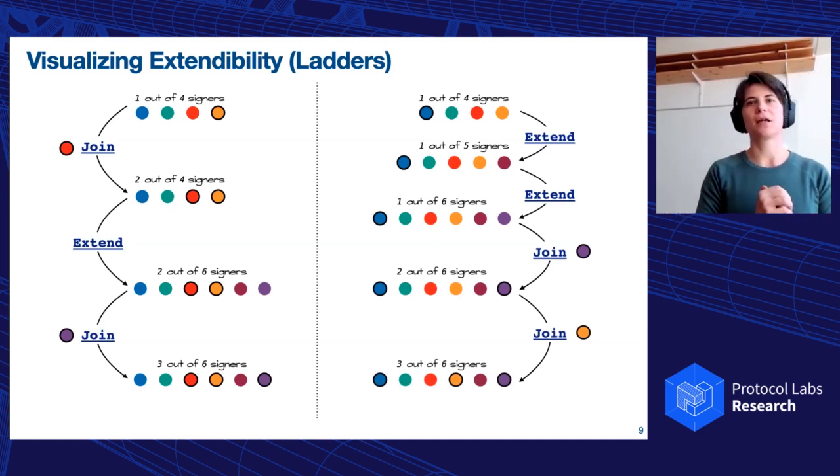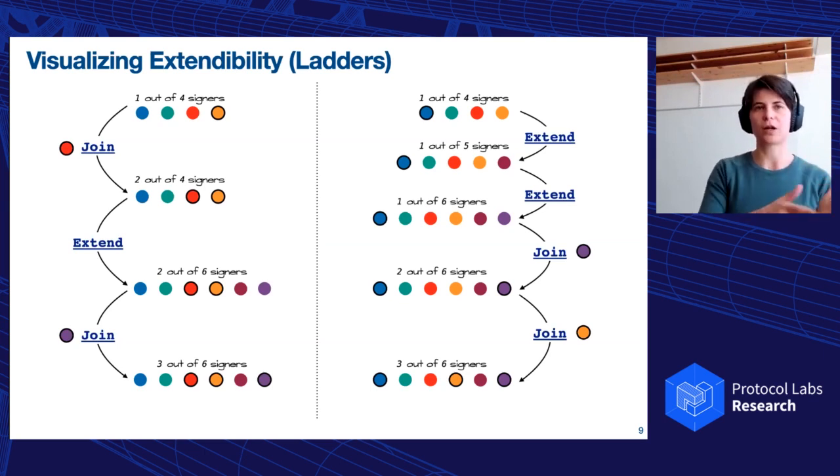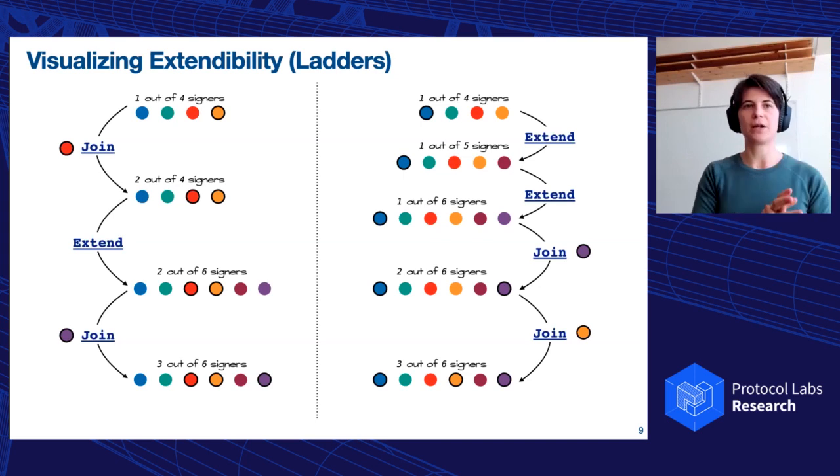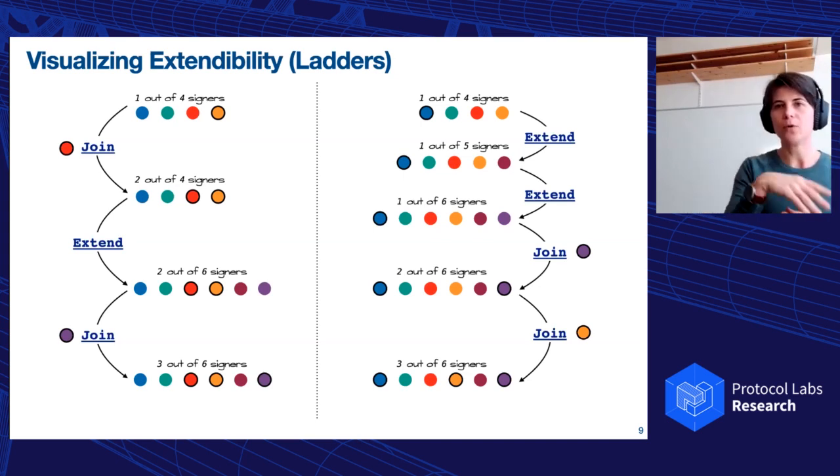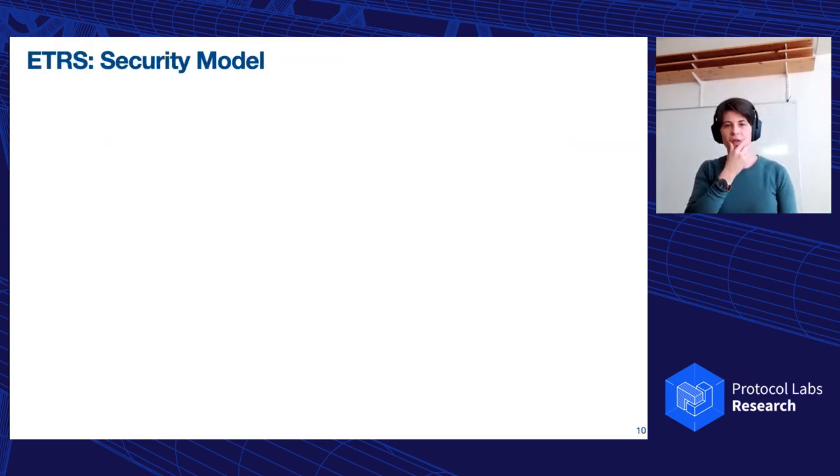But I can reach the same three out of six also with a different path. Let's say that I start again from a one out of four signature, but this time it's been the blue person signing. And then maybe I can extend this, getting a one out of five signer signature, then I can extend it again, getting a one out of six, then I can join with the purple, and then I can join again with the orange. So we will have two notions of anonymity. The basic one is saying that essentially I cannot distinguish the top or the bottom ones. So threshold signatures that have the same threshold and the same number of users. I cannot distinguish if it's been signed by the red, the orange and the purple person, or by the blue, the orange and the purple person. And the stronger version of anonymity instead tells me that I cannot even distinguish which path, which ladder. Have I extended using the left path or have I done all of this extension and joining as the right path?